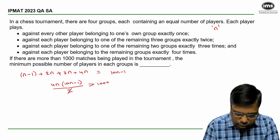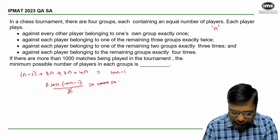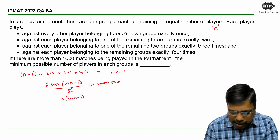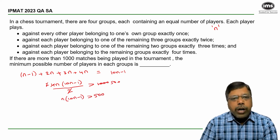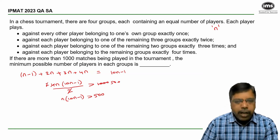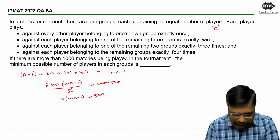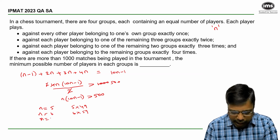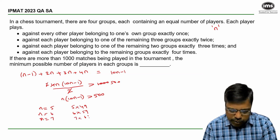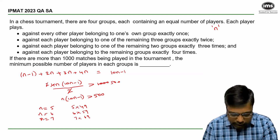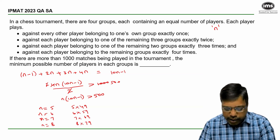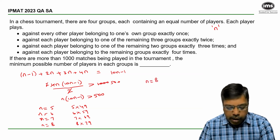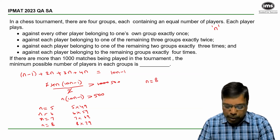Simplifying, we get n × (10n - 1) must be greater than 500, and we want the minimum value of n. Using trial and error: n=5 gives 5×49=245, no. n=6 gives 6×59=354, no. n=7 gives 7×69=483, very close but no. n=8 gives 8×79=632, which exceeds 500. So the minimum value of n is 8, meaning the minimum number of players in each group is 8.